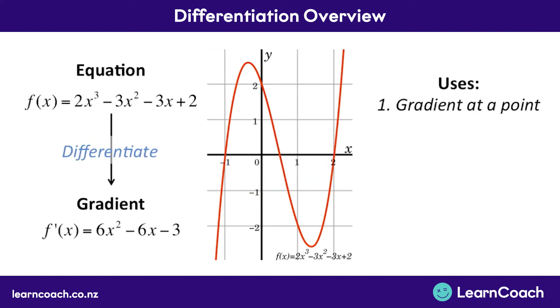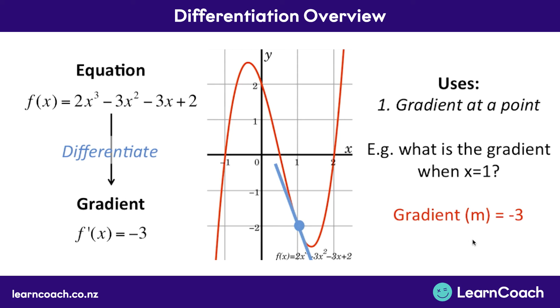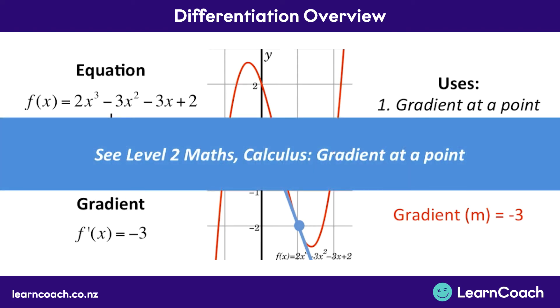The next thing we're going to look at is the uses. The first use is we can calculate a gradient at a certain point. So for example, what is the gradient when x equals one? This is it here. We need to use our gradient function, our differentiated equation, to work out the slope at this point at one. To do that, we substitute in our x equals one value into our differentiated equation. That's going to give us six times one squared and so on and so on. If you solve that, you'll find out that your gradient function equals negative three. So your gradient must equal negative three. For more in-depth steps on this, go to Level 2 Maths Calculus video, gradient at a point.